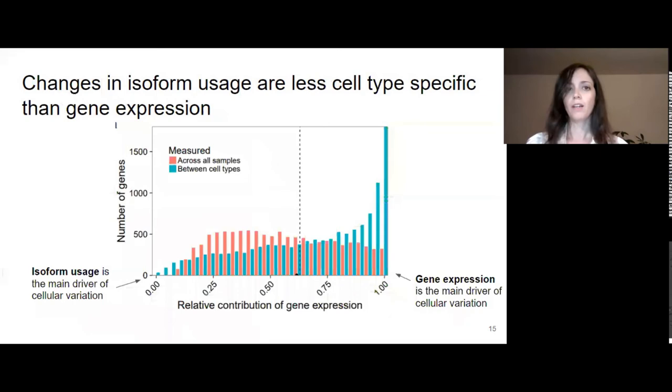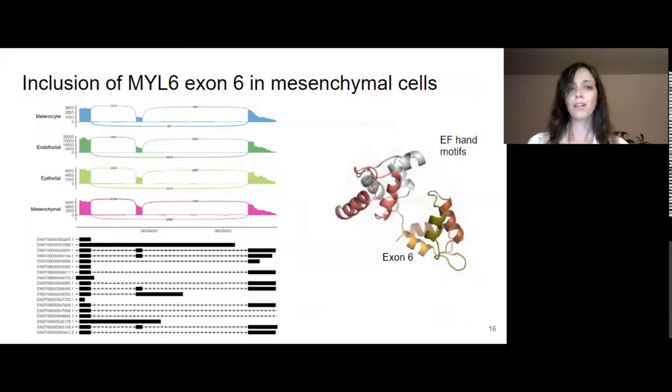Then we also looked at the impact of splicing on cellular variation. In this plot, we showed the contribution of gene expression versus isoform usage to the changes in isoform abundances across cell types. We observed that most of the variation is due to changes in gene expression. However, we could still find more than 200 alternate splicing events that are cell type-specific. This is one example where we show preferential inclusion of exon 6 of MYL6, which is a myosin gene, in mesenchymal cells compared to the other cell types. Exon 6 is important because it overlaps the EF-hand motif of MYL6.